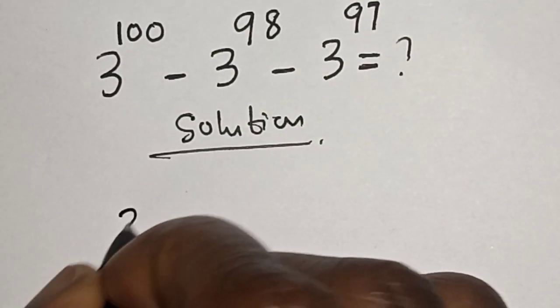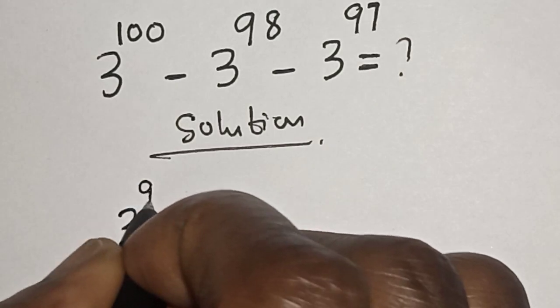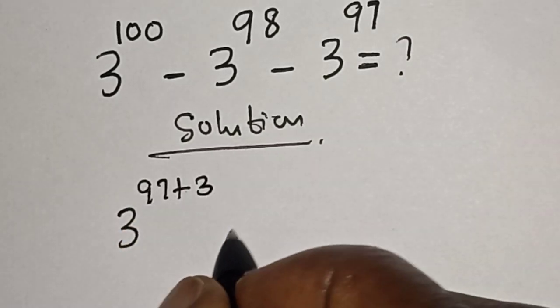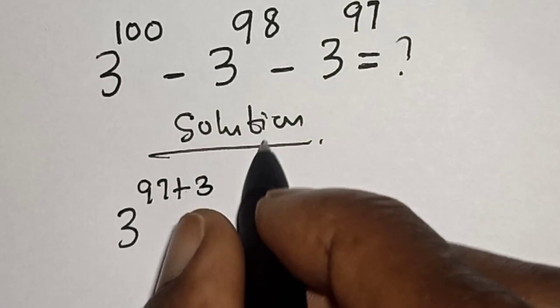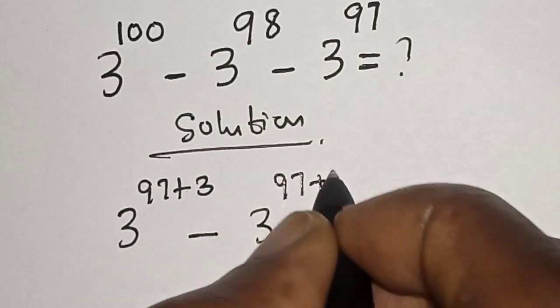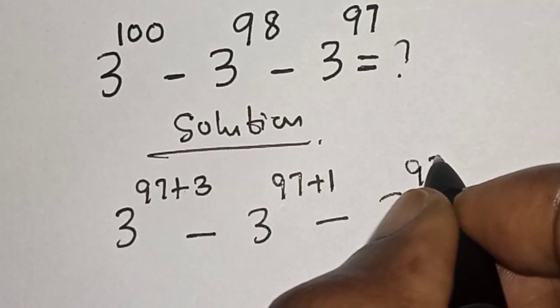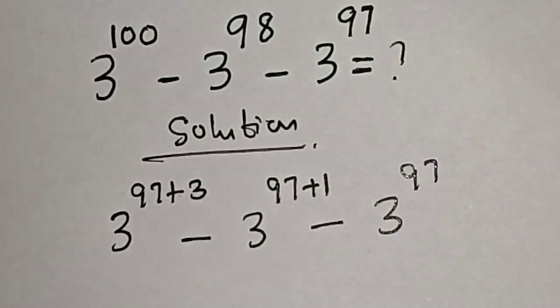3 raised to power 100 can be written as 3 raised to power 97 plus 3. 3 raised to power 98 can be written as 3 raised to power 97 plus 1, minus 3 raised to power 97, because the smallest part is 3 raised to power 97.